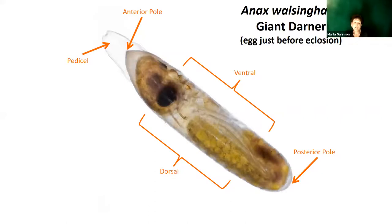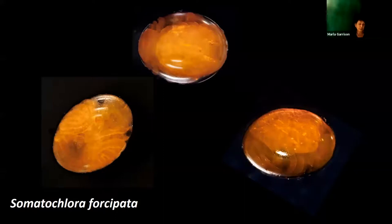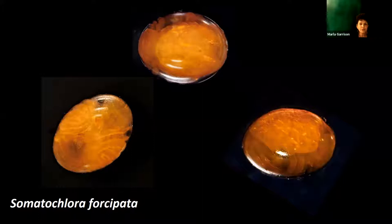Let's take a quick look at early development before considering specific anatomical structures. Just before an egg is ready to hatch, the main features of the soon-to-be nymph can actually be seen through the eggshell or chorion. Here is an elongated egg typical of species that oviposit endophytically — in vegetation — and you can see the eyes, mouthparts, legs, caudal segments curled around, even the anal pyramid. With ellipsoidal eggs, more typical of exophytic oviposition, you can again see all of these nymphal structures: eyespots, antennae, legs in ventral, dorsal, and lateral views.